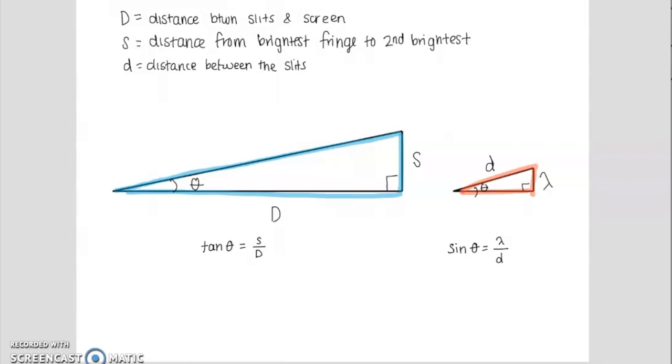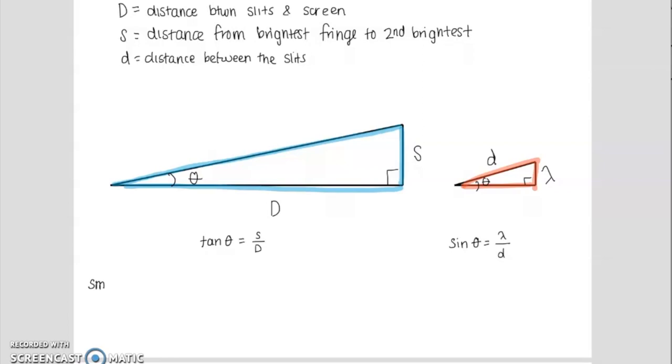I'm going to make an assumption here. I'm going to assume that the small angle approximation, you may have heard of that in math, the small angle approximation can be applied here. And the small angle approximation says that the tangent of theta is approximately equal to theta itself, and it also says that the sine of theta is approximately equal to theta itself as long as that theta is small. So that means that over here, my tangent theta equals S over D is going to simplify to just theta equals S over D. And on my red triangle, sine theta equals lambda over d simplifies to be theta equals lambda over d.